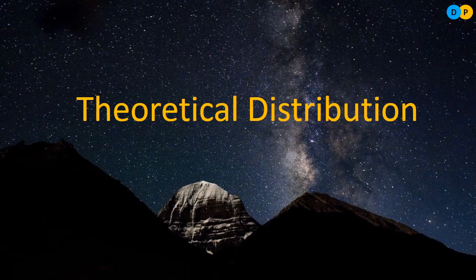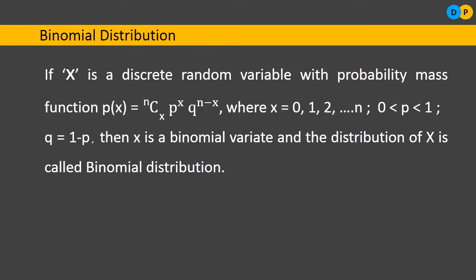Hello students, welcome to YouTube channel Vidya for Success. In this video let us study the continued part of binomial distribution. So what is binomial distribution? If a discrete random variable x has the probability mass function P(x) = nCx * p^x * q^(n-x), where x can take values 0, 1, 2, 3, ..., n, and probability of success p lies between 0 and 1, and failure q = 1 - p, then the variate x is referred as binomial variate and the distribution is referred as binomial distribution.